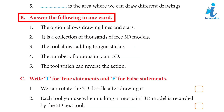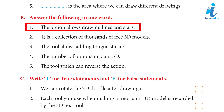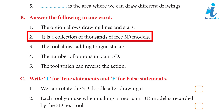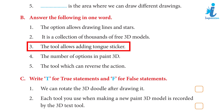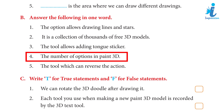5. Dash is the area where we can draw different drawings. Answer: Canvas. Answer the following in one word: 1. The option that allows drawing lines and stars. Answer: 2D shapes. 2. It is a collection of thousands of free 3D models. Answer: 3D library. 3. The tool that allows adding tongue stickers. Answer: Stickers.